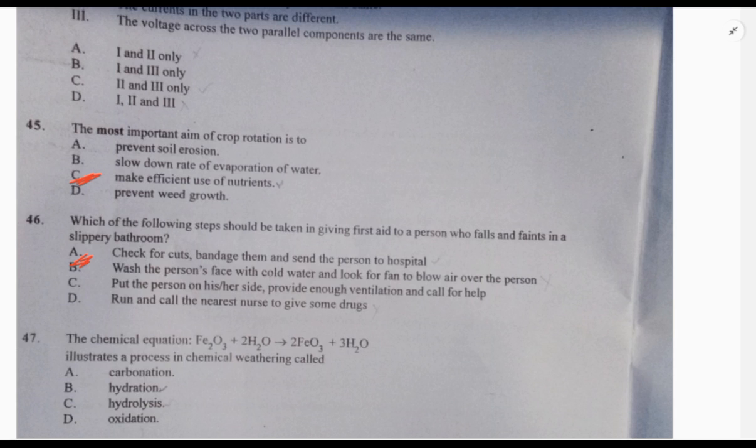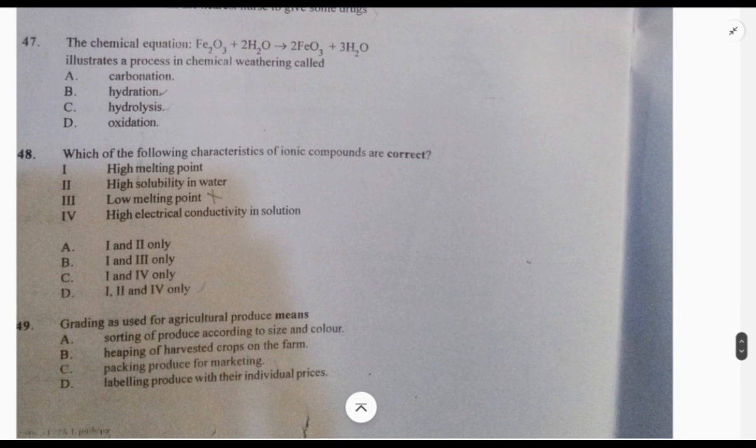47: the chemical equation Fe₂O₃ + H₂O giving Fe(OH)₃ illustrates hydrolysis. 48: which characteristics of ionic compounds are correct? High melting point - yes, high solubility in water - no, low melting point - no, high electrical conductivity in solution - yes. The answer is I and III, so C. 49: grading as used for agricultural produce means sorting of produce according to size and color. So 49 is A.